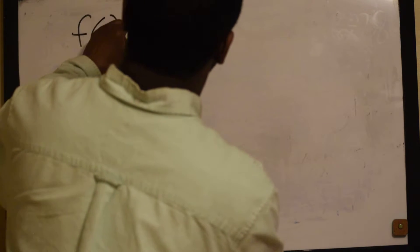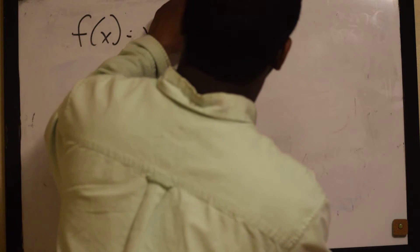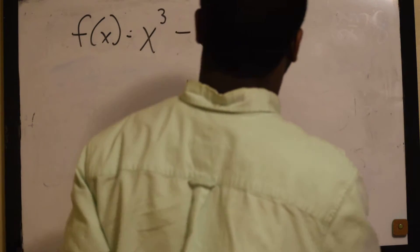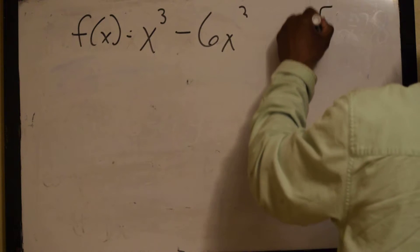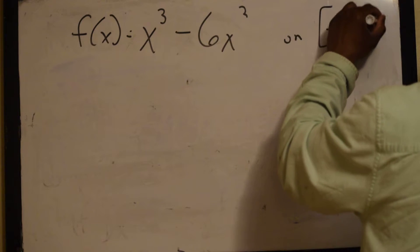Okay, f of x is equal to x cubed minus 6x squared. We're on the interval negative 1 to 2.